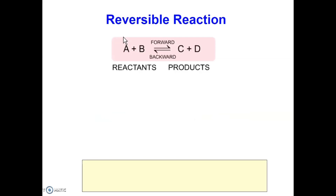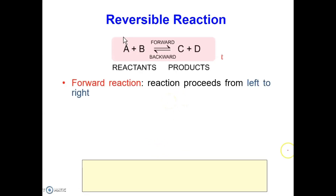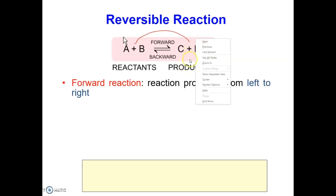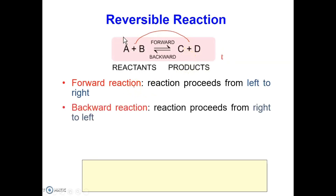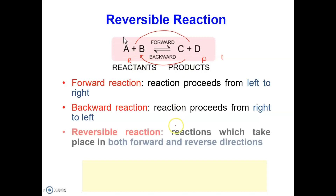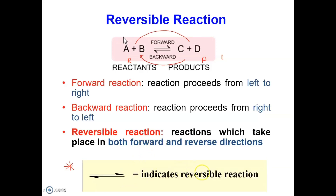Let's take a closer look at what is a reversible reaction. A forward reaction is a reaction that proceeds from left to right, and a reverse reaction proceeds from product to reactant. A reversible reaction proceeds in both forward and reverse directions. When writing a reversible reaction, this double-headed arrow indicates a reversible reaction.